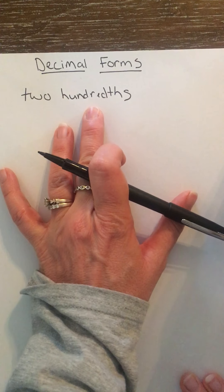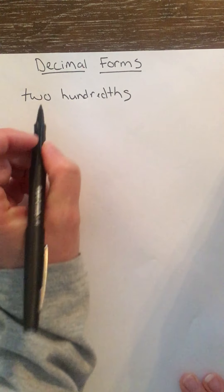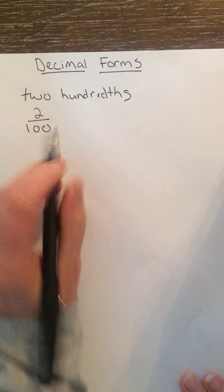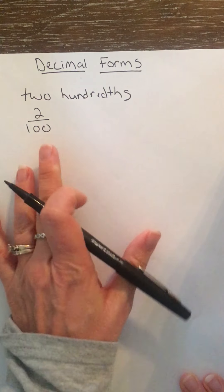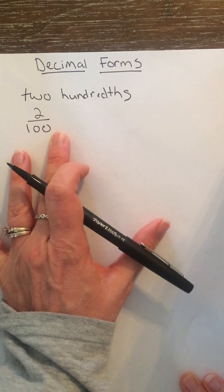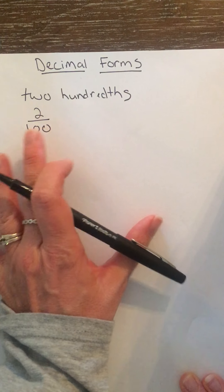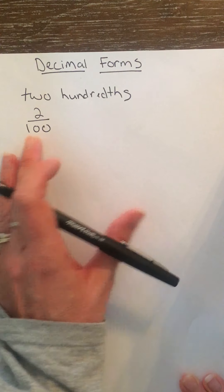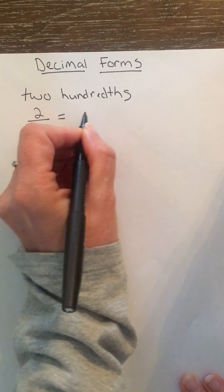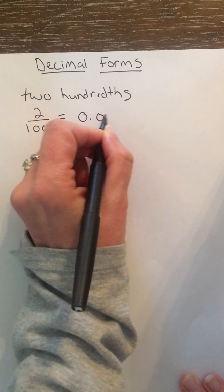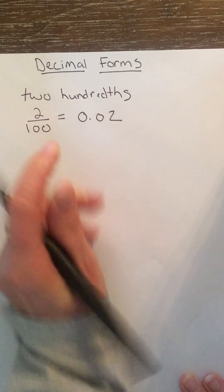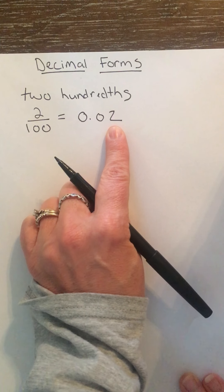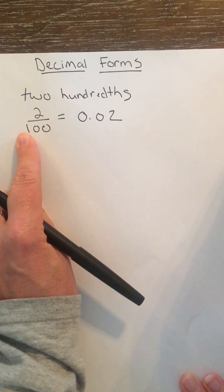So I'm going to write two hundredths as a fraction. This is much easier now for me to visually see how I would write two hundredths as a decimal — that would be 0.02. The two is in the hundredths place because we have two hundredths.